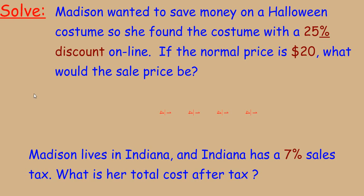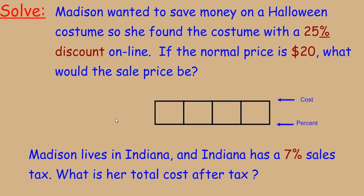First we'll practice the skills we're developing. Madison wanted to save money on a Halloween costume, so she found a costume with a 25% discount online. If the normal price is $20, what would the sale price be? We can set up a double number line to help illustrate the percent of the number compared to the cost. We know that 100% of the cost is $20.